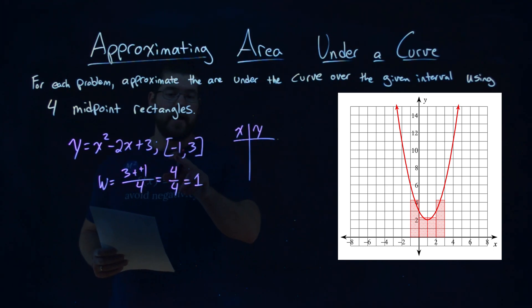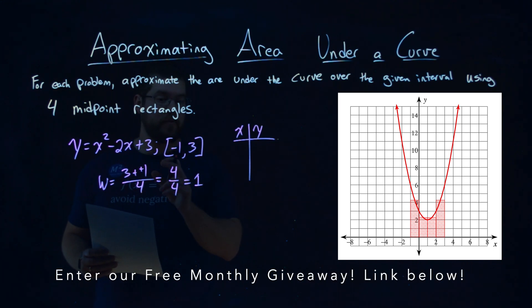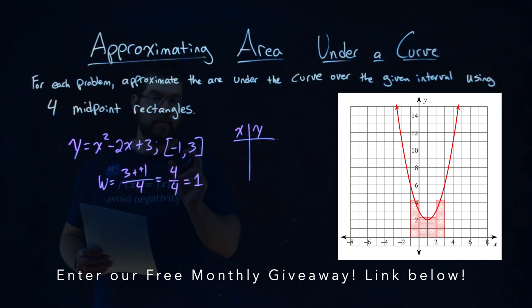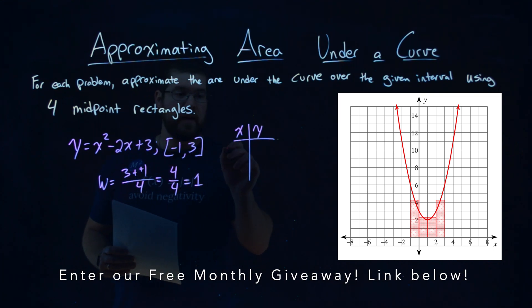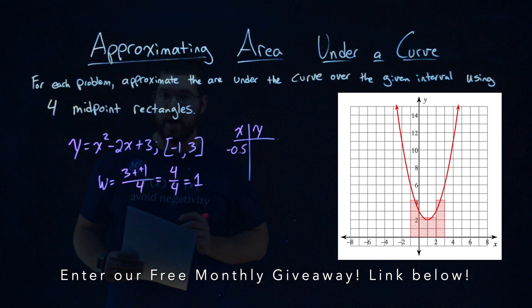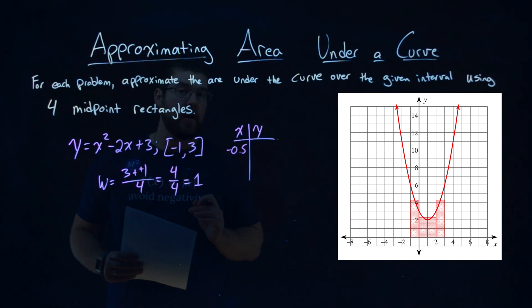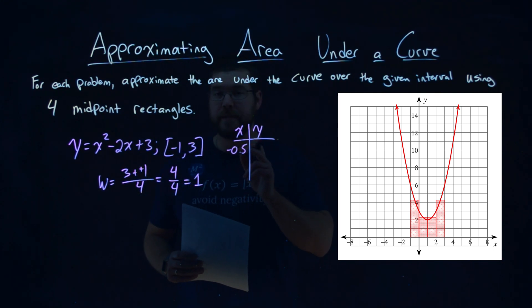In there. So if the left endpoint starts at negative 1 of the first rectangle, the right endpoint of that rectangle, we add 1 to it, get 0, halfway between that, then negative 0.5. So the midpoint of the first rectangle is negative 0.5.